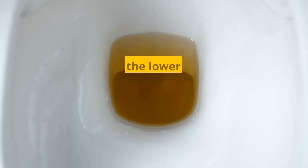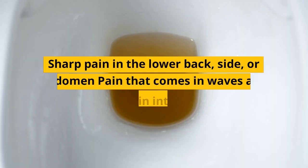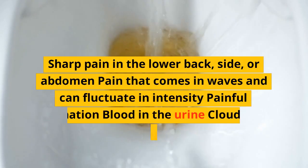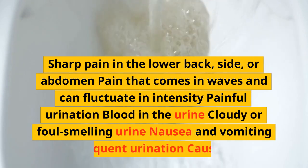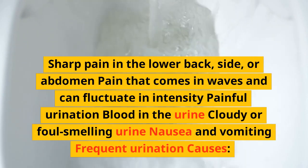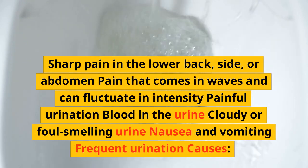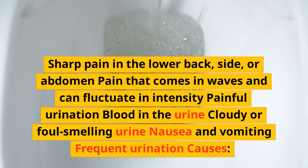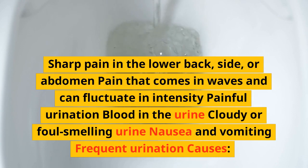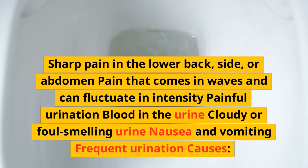Symptoms: sharp pain in the lower back, side, or abdomen — pain that comes in waves and can fluctuate in intensity. Painful urination, blood in the urine, cloudy or foul-smelling urine, nausea and vomiting, and frequent urination.